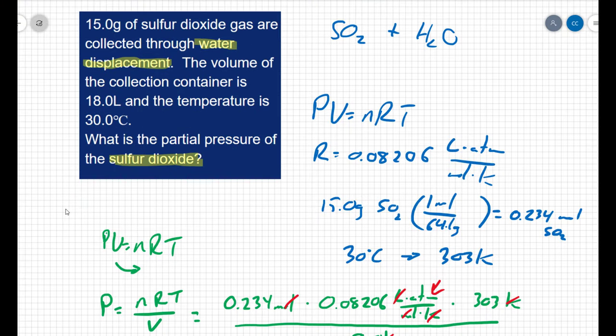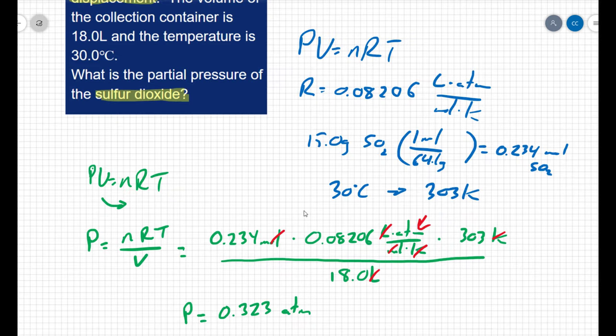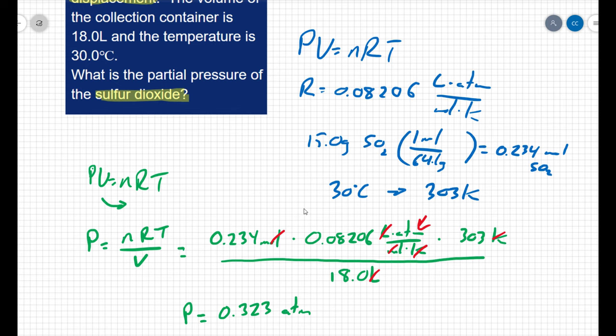At the very beginning of this problem, we indicated that there would be two gases present. We would have your sulfur dioxide gas and your water present because we're collecting the gas through water displacement. So when we use the ideal gas law to solve, this pressure we found here is the pressure of just the sulfur dioxide gas.